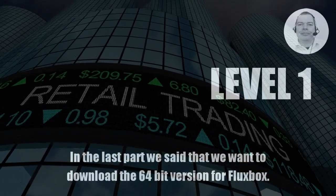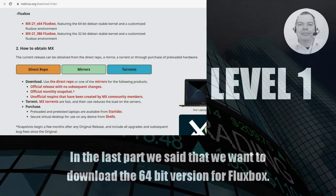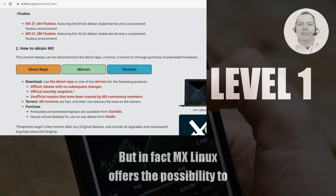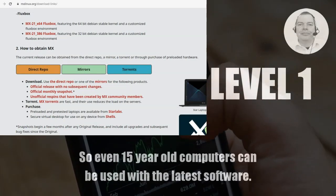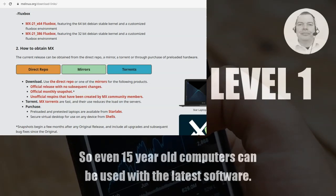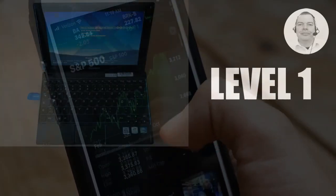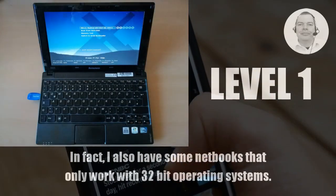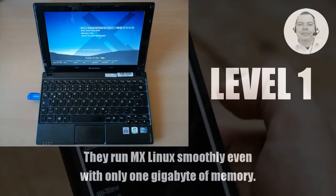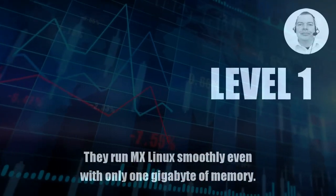In the last part we said that we want to download the 64-bit version for Fluxbox. But in fact MX Linux offers the possibility to download a 32-bit version, so even 15-year-old computers can be used with the latest software. In our example we use a device from 2010. I also have some netbooks that only work with 32-bit operating systems — they run MX Linux smoothly even with only 1 GB of memory.